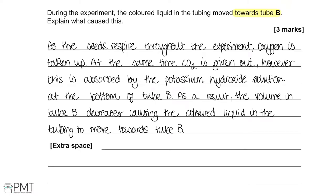The first mark is for saying that oxygen is taken up by the seeds during respiration. The second mark is for saying that CO₂ is absorbed by the potassium hydroxide solution. The final mark is for saying that the volume in tube B decreases.